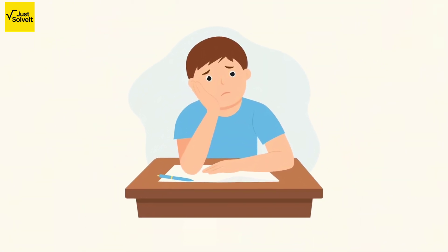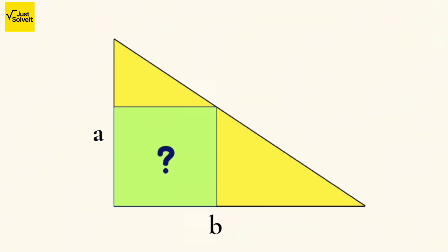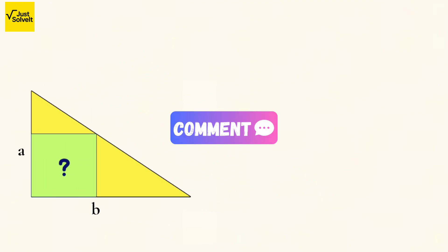But wait, before you go, here's one more challenge. Can you find the area of the square in terms of A and B, where A and B are the legs of any right triangle? Think it through and drop your answer in the comments below. Let's see who gets it right.